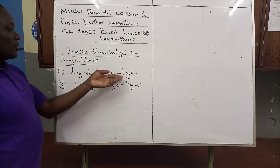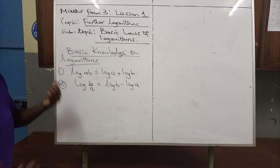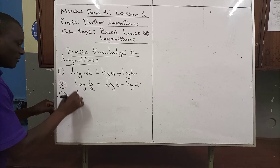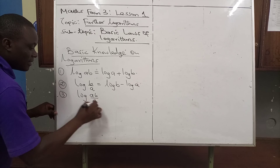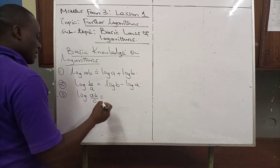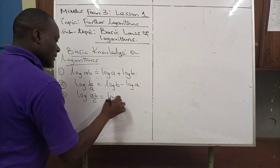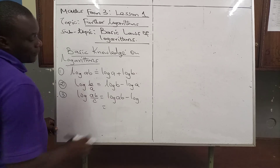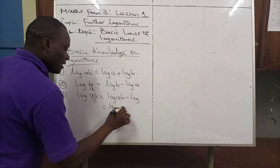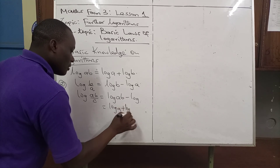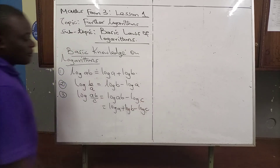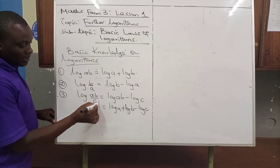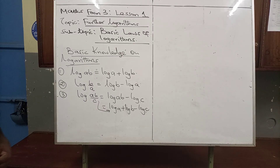When you have a multiplication, you change it into an addition. Number three: when you have been given log(A·B divided by C), this can be written as log(AB) minus log C, which we can further simplify as log A plus log B minus log C.